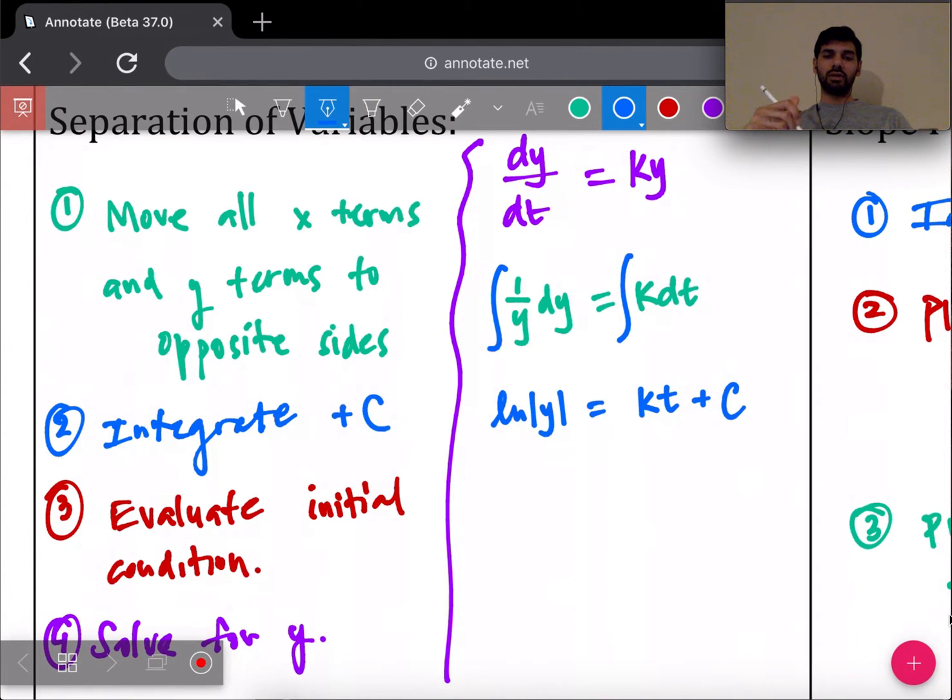The next step is I would have to evaluate an initial condition. For example, if a problem gives you a coordinate that the original equation goes through, you could plug in the y value here and the t value there, and then you can solve for C.